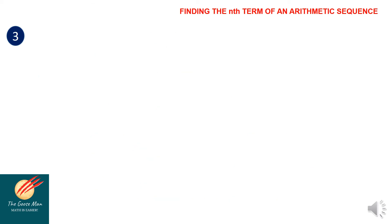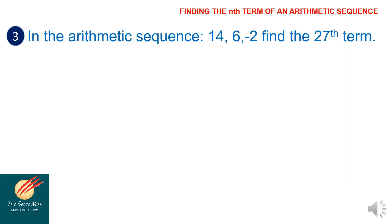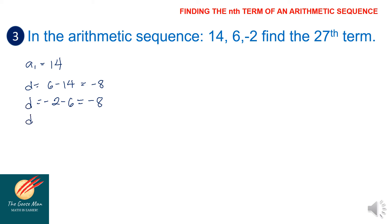Let's try another example. In the arithmetic sequence 14, 6, negative 2, find the 27th term. The first term a sub 1 is equal to 14. For the common difference: d equals 6 minus 14, which equals negative 8. Verifying: negative 2 minus 6 is also negative 8. So the common difference is negative 8.